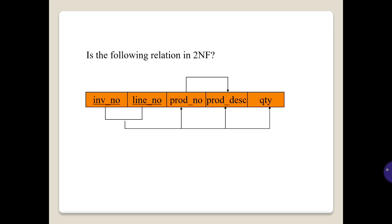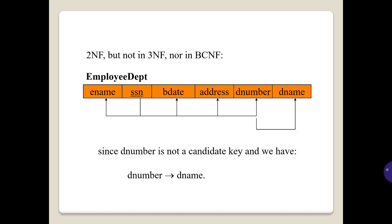Consider the following relation in 2NF — you can look at this picture. It is in 2NF but not in 3NF and not in BCNF, because DeptNumber is not a candidate key and we have DeptNumber → DeptName.